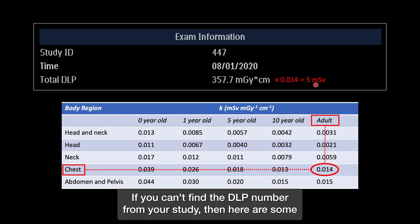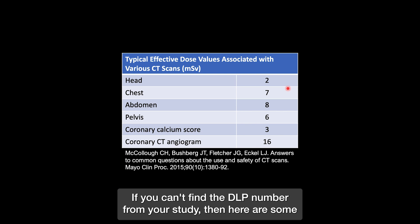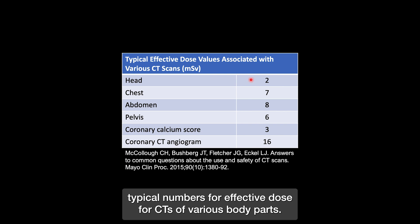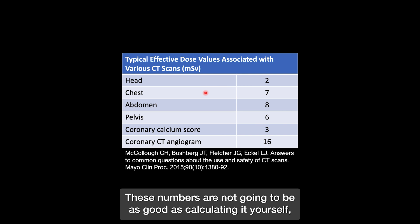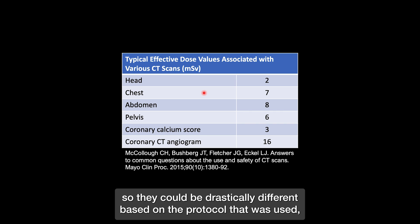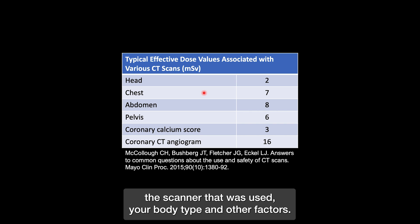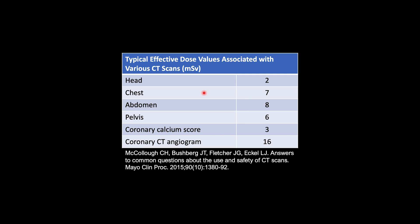If you can't find the DLP number from your study, here are some typical numbers for effective dose for CTs of various body parts. These numbers are not going to be as good as calculating it yourself, so they could be drastically different based on the protocol that was used, the scanner that was used, your body type, and other factors.